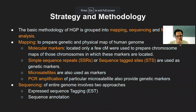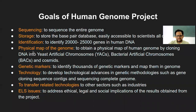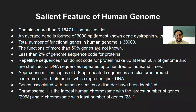Last class we looked at the Human Genome Project — its basic characteristics, the three billion base pairs studied, and the several goals to identify, sequence, and store genetic information. Based on what was studied, certain salient features were observed.